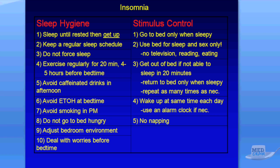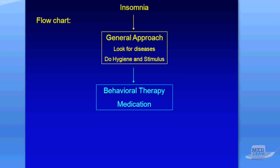Sleep hygiene and stimulus control are the approaches we use for an insomnia patient on initial intake, after ruling out obvious diseases that could cause the insomnia. The general approach is: look for diseases, then do hygiene and stimulus control, and if the patient still has insomnia, move on to behavioral therapy and medication. Join us for the next lecture where we talk about behavioral therapy. Thanks for joining us.